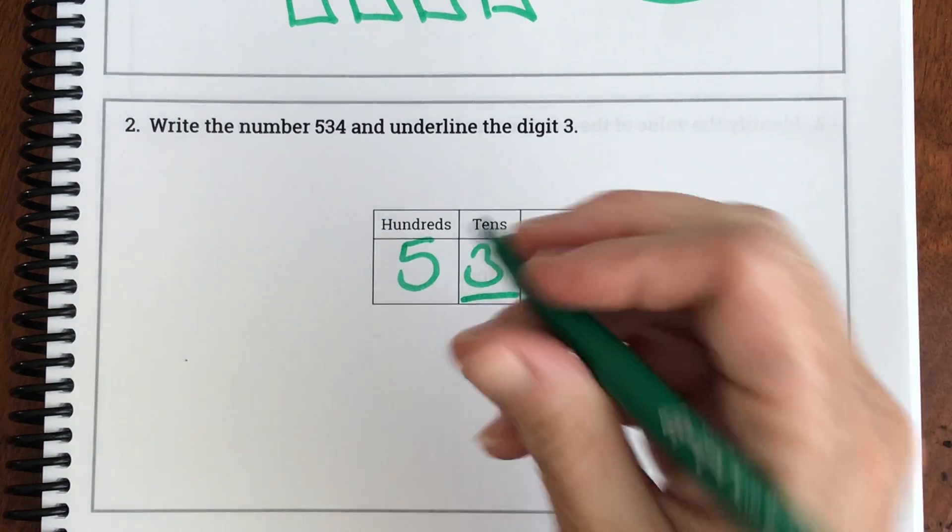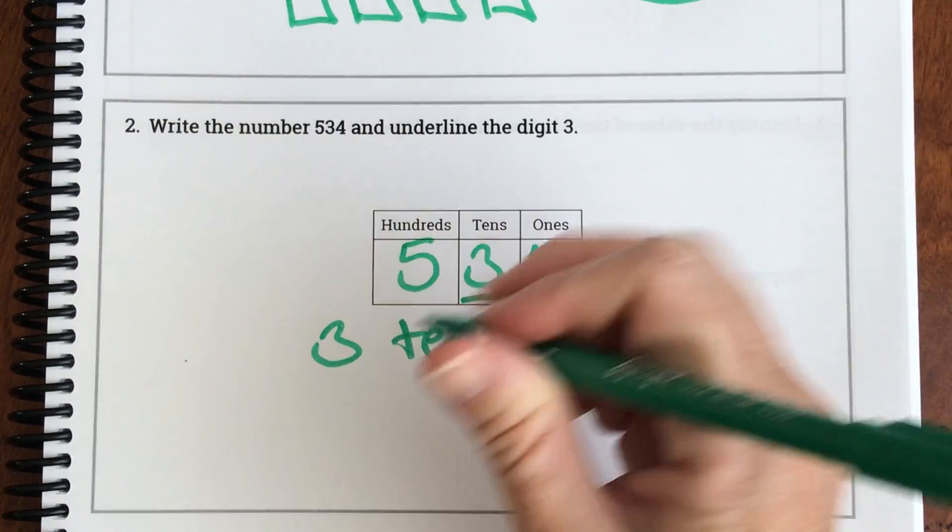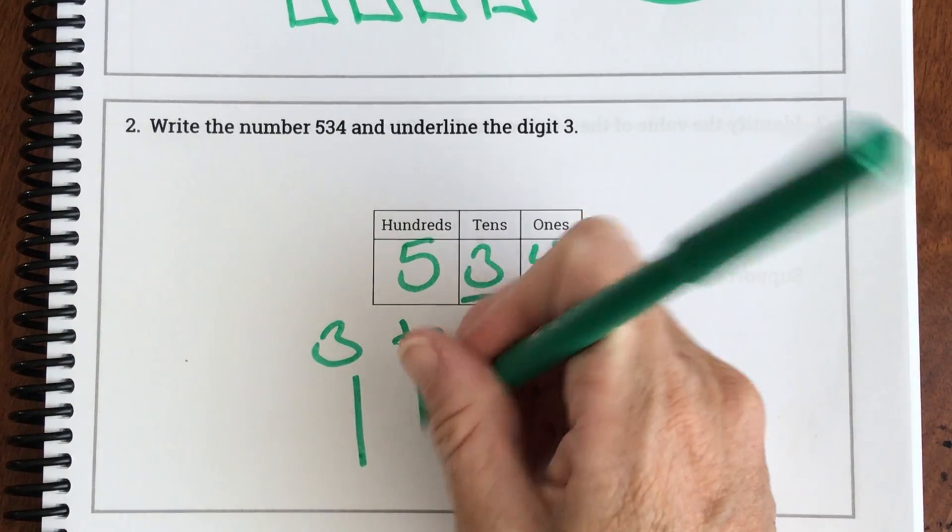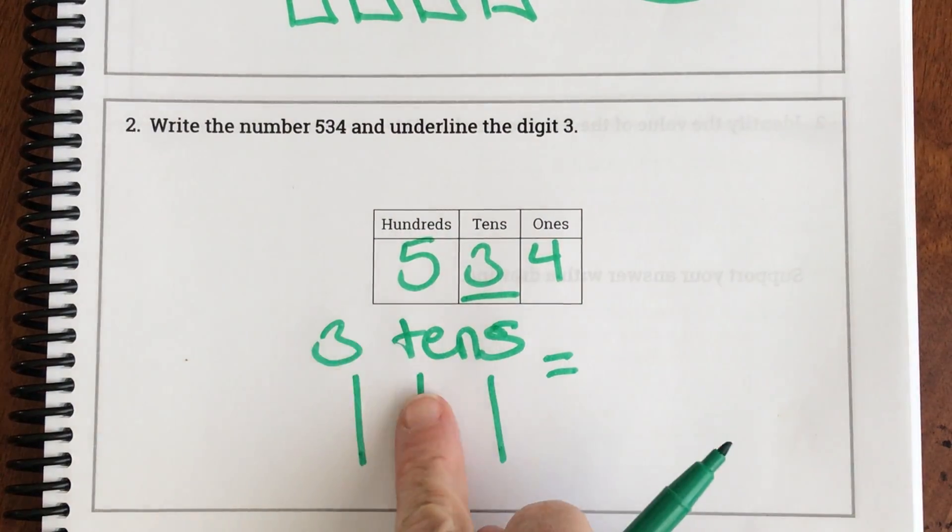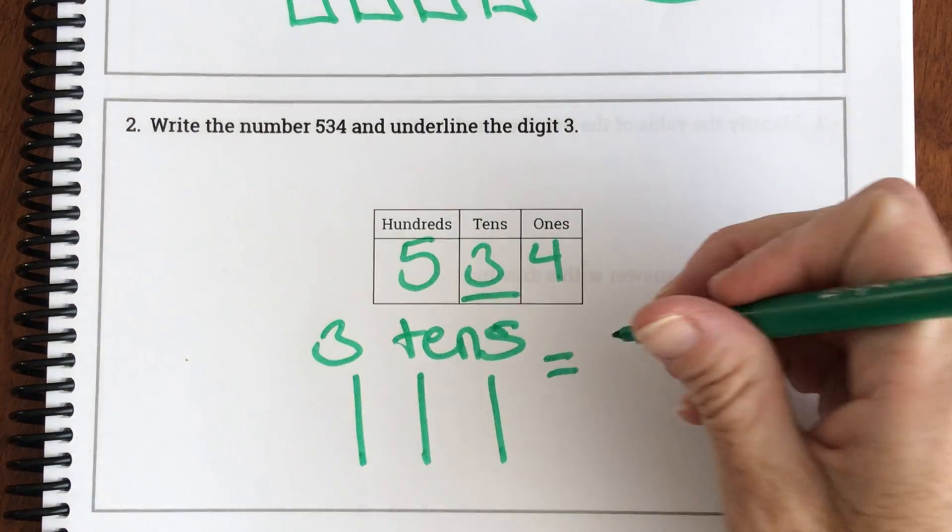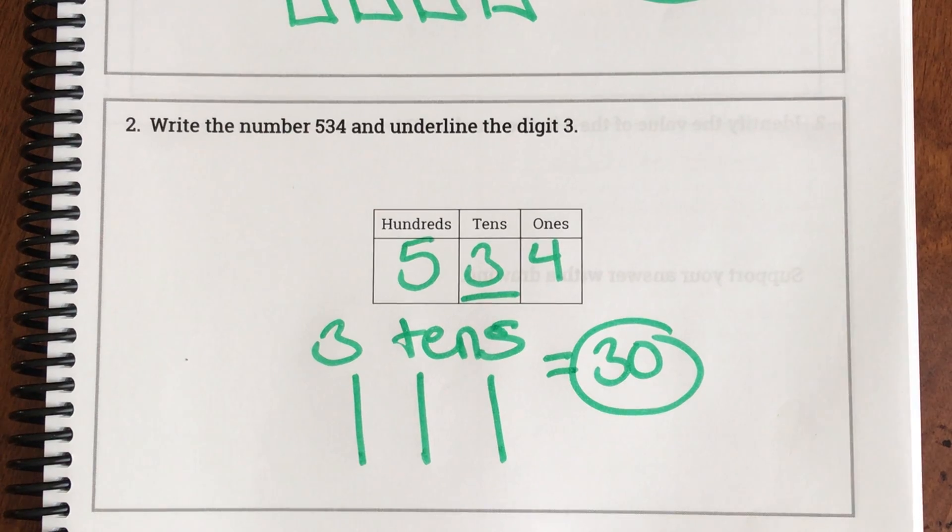And if we are to draw that that's a 10 rod, a 10 rod, and a 10 rod. So this would be 10, 10, and 10 equals 30. So the value of this digit is 30.